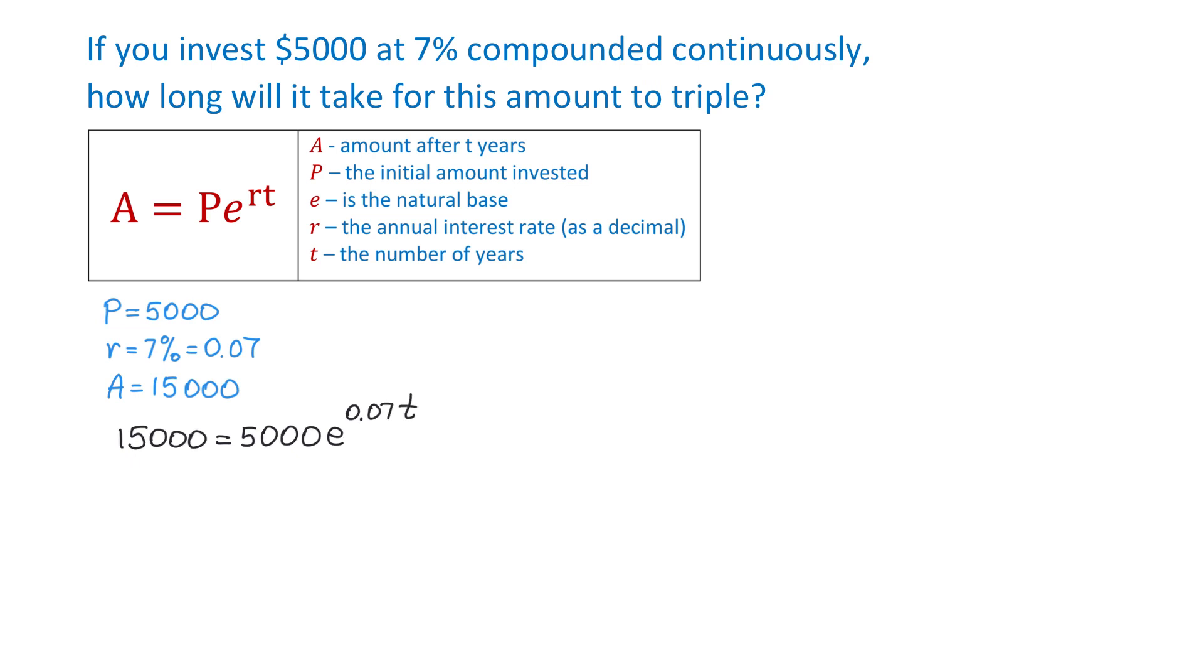This is an exponential equation and to solve it we will start by isolating the exponential expression on one side. For this, we have to divide both sides by 5000.